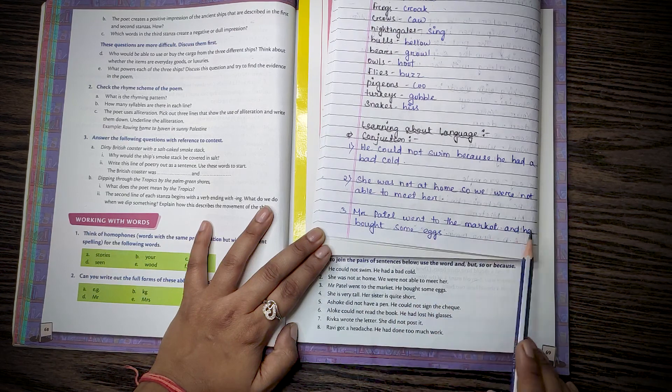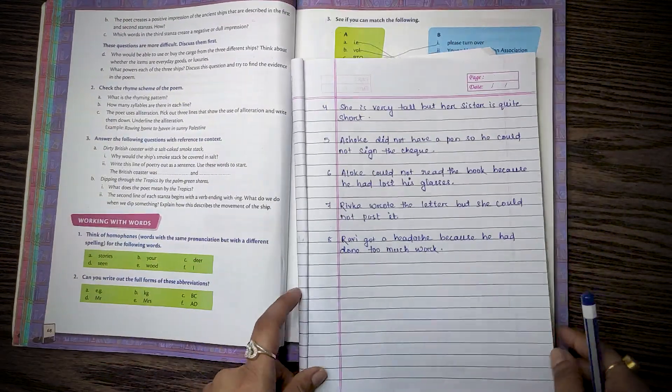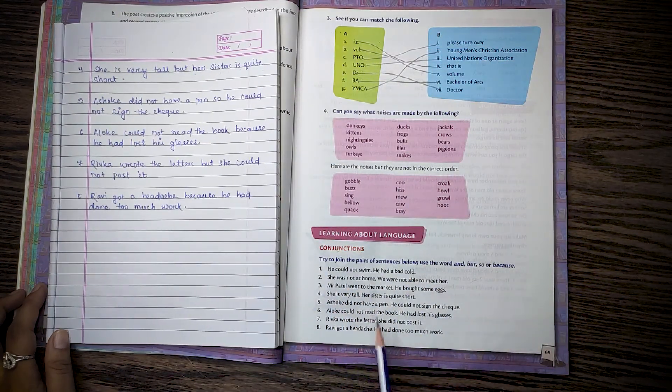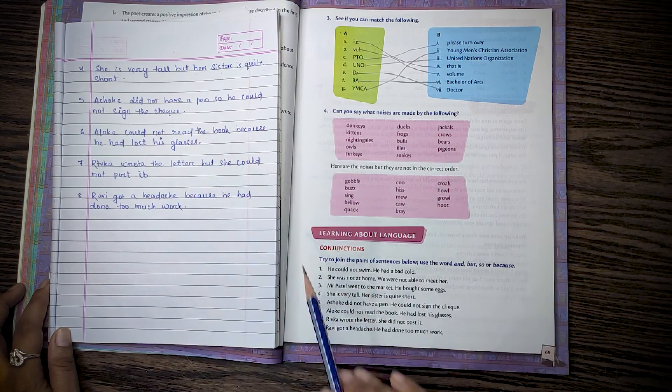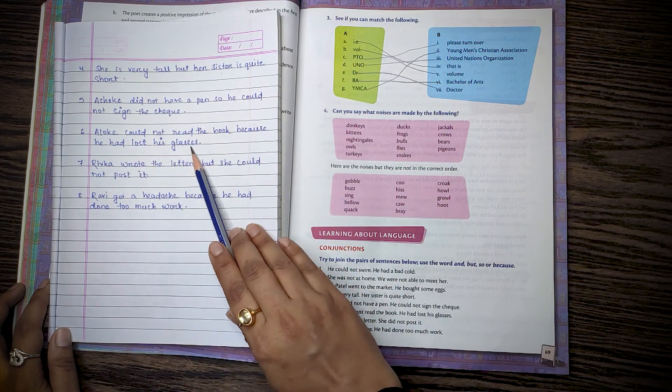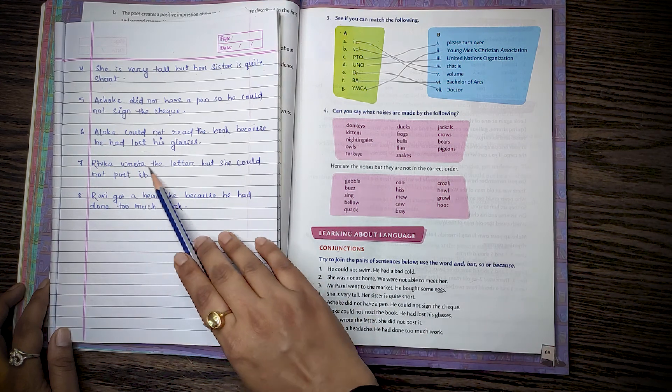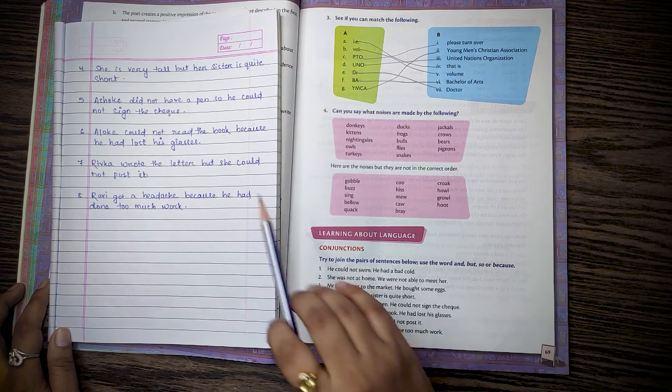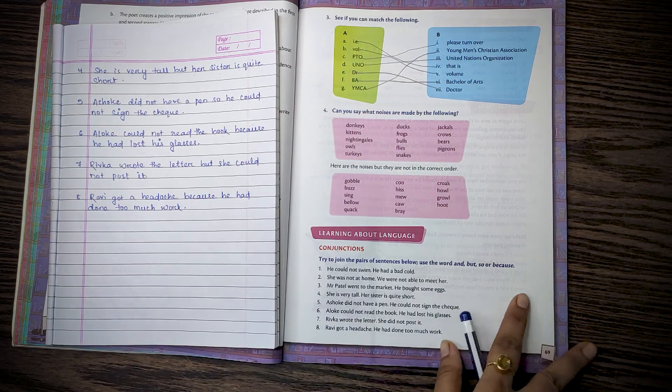Then number 4, she is very tall but her sister is quite short. Then number 5, Ashok did not have a pen so he could not sign a check. Number 6, Alo could not read the book because he had lost his glasses. Then 7, Riva wrote the letter but she did not post it. Number 8, Ravi got a headache because he had done too much work.